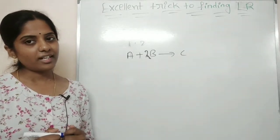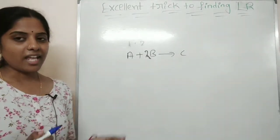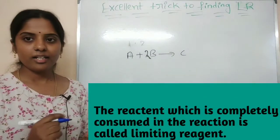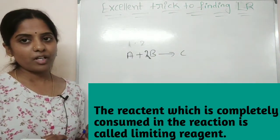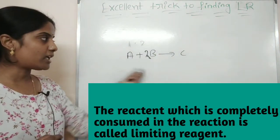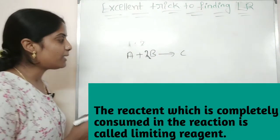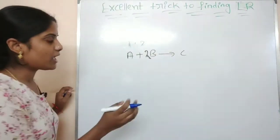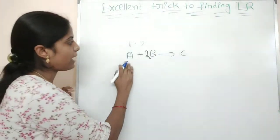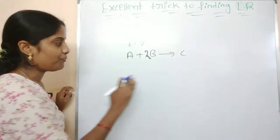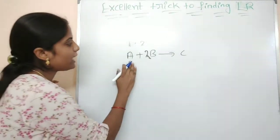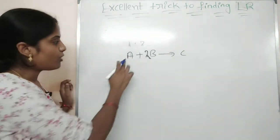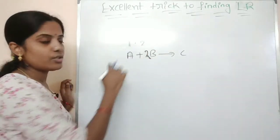First, the limiting reagent is the reactant which is completely consumed in the reaction. So we have a reaction here: A plus 2B gives rise to C. This A plus 2B always reacts in the ratio of 1 is to 2.